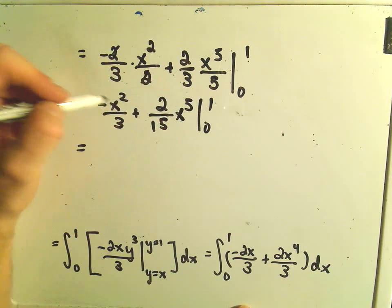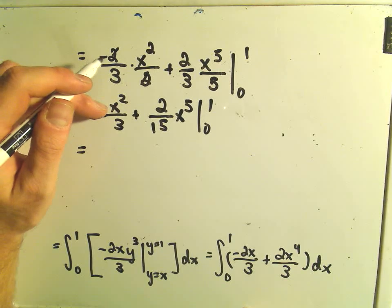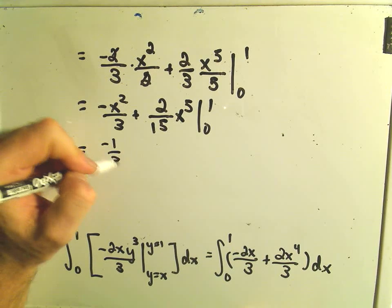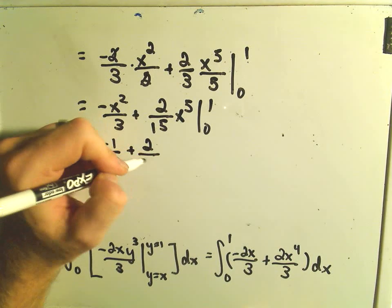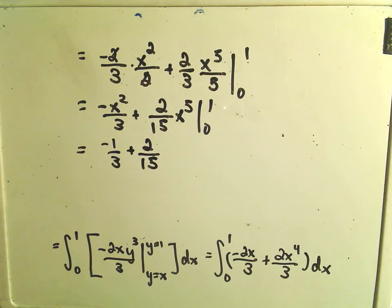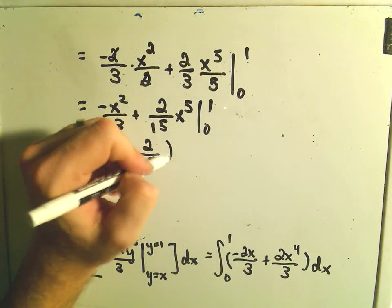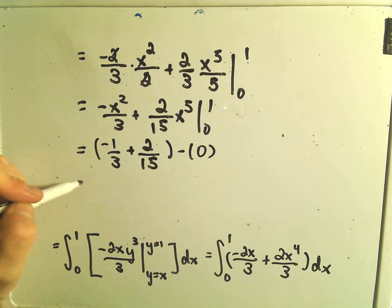So if we plug in our upper limit, 1, we have to square the 1 first, so we'll get 1 squared, we'll get negative 1 3rd, plus 2 over 15, 1 to the 5th being 1. And then our lower limit, we're just going to get a bunch of 0s.